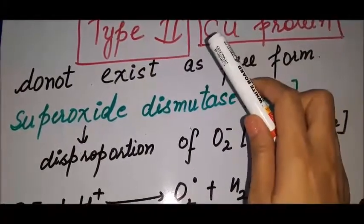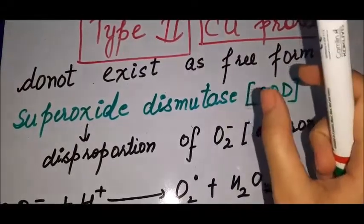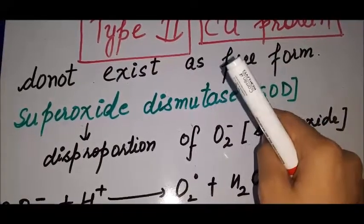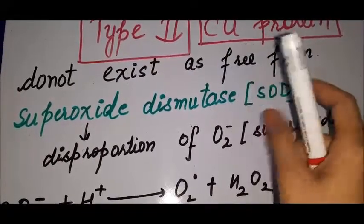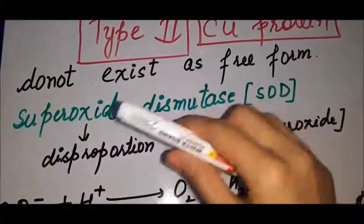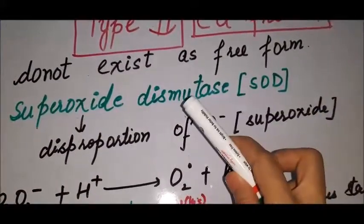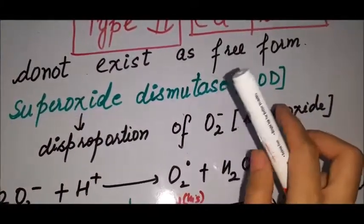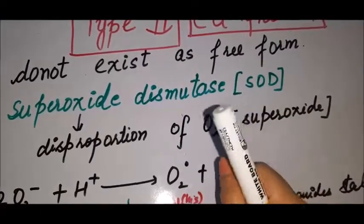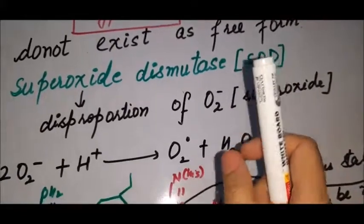Firstly, the important point is that type 2 copper proteins do not exist as a free form. As we studied azurin, it exists in free form, but this type of copper protein is not in free form. A very important example — one that has appeared in recent exam questions — is superoxide dismutase, SOD.